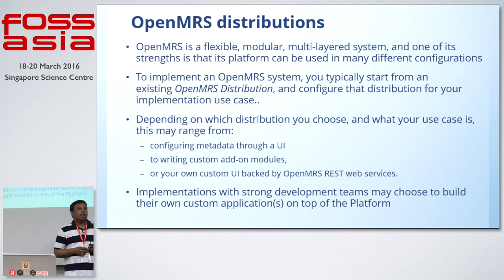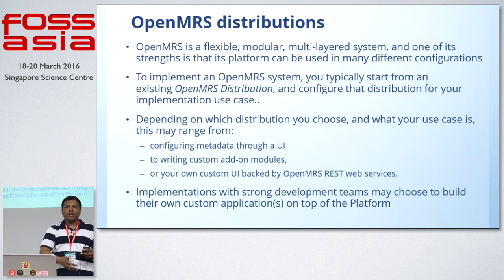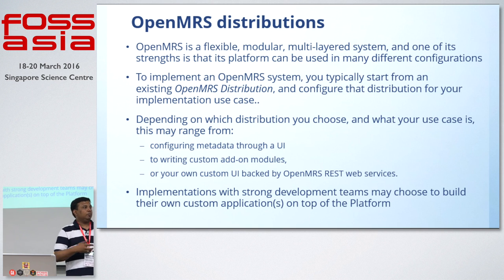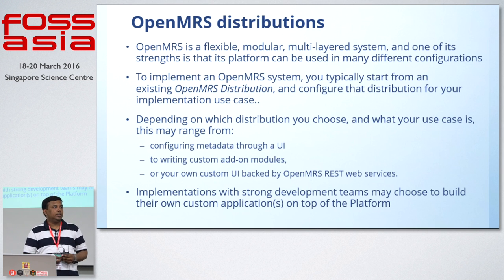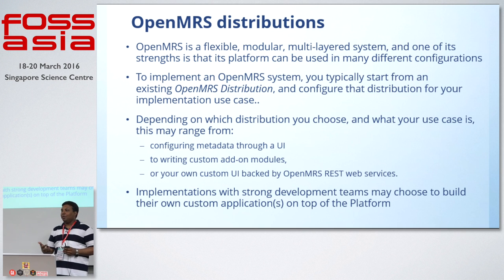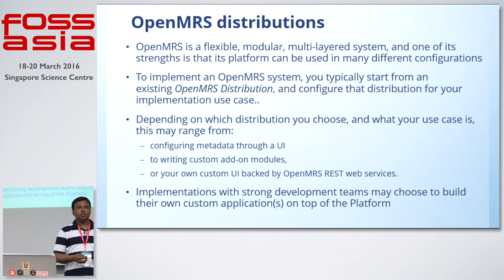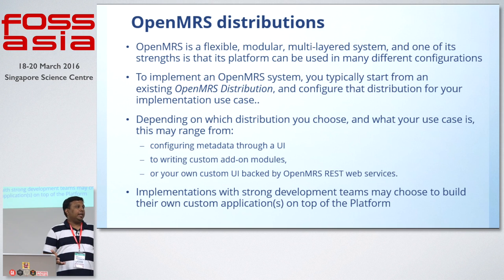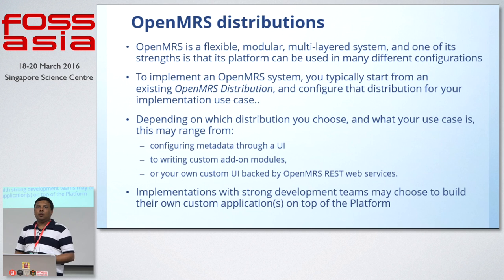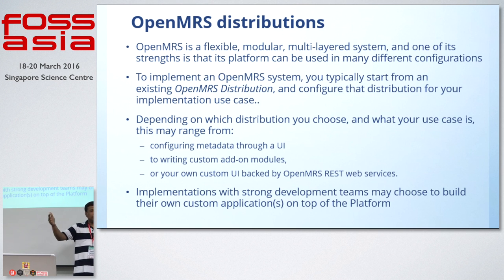What are OpenMRS distributions? We took the idea from Linux distributions, where the kernel is a core product and you have multiple distributions serving different purposes. OpenMRS is a flexible multi-layered system where people configure or write custom modules to implement different processes in different healthcare settings. To implement OpenMRS, you start with a distribution, configure it, and implement your use case. Depending on the distribution and use case, you may configure metadata elsewhere, write custom add-on modules, or build a custom UI over the backend.